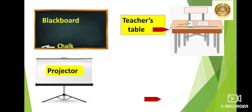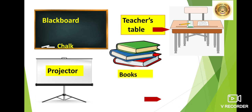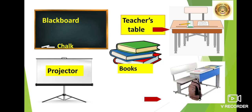Now tell me children, which things you need to study? Yes, the main thing that you need to study is the books. So these are the books. Now what is this? Yes, when you enter the school, the classroom, where you sit? You sit on the bench and a desk is there to keep your belongings like book, pen, pencil, ruler, compass box, etc. So this is a desk and a bench.